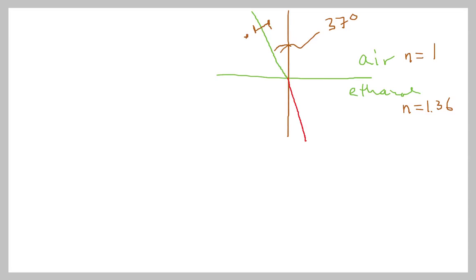And so this angle here is going to be a little bit less than 37 degrees and we can go ahead and calculate it and see what that looks like. And in order to calculate that, we need to use Snell's law. And this is what Snell's law is: N1 sine theta 1 is equal to N2 sine theta 2.